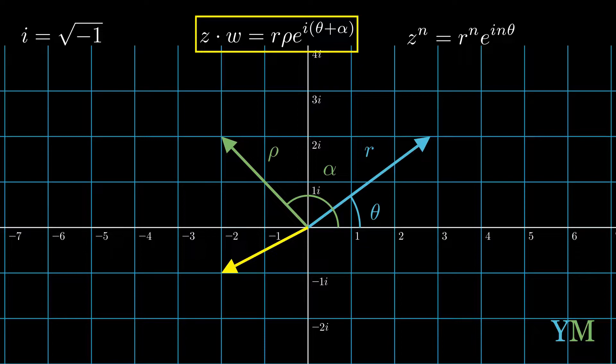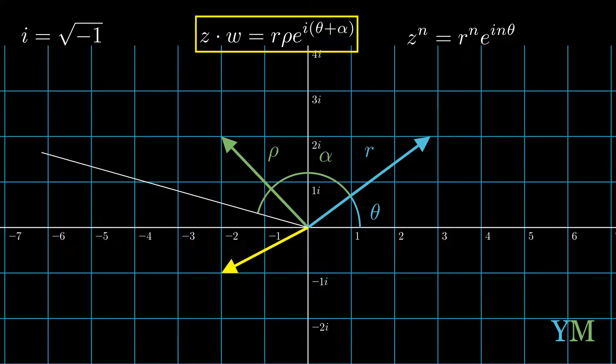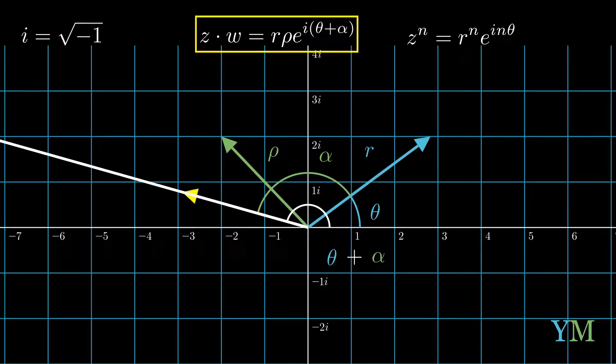Let's view this not from a technical standpoint but from a theoretical one. We know that the product gives us a new complex number with length r times rho. Its angle is the sum of theta and alpha — if we take theta and add it to alpha, we receive the angle of this new complex number, meaning the product lies somewhere on that line. Its length is simply the multiplication of r times rho. With specific numbers and angles, we can compute it, but visualizing and understanding it is just as important.